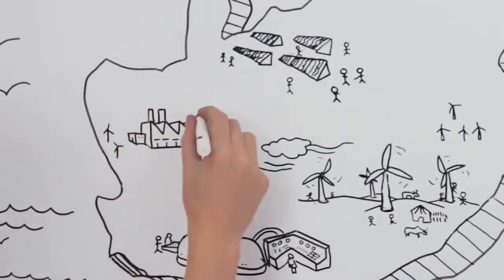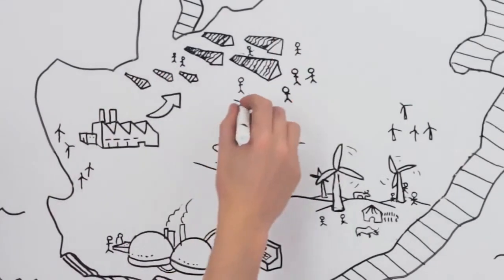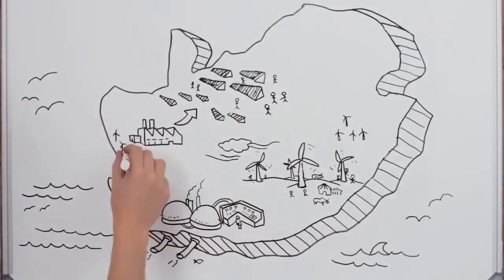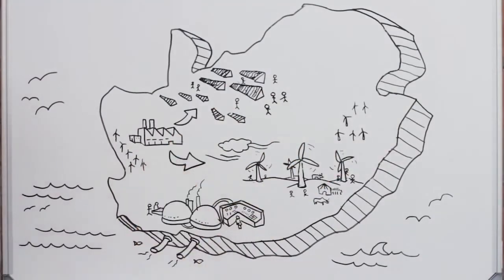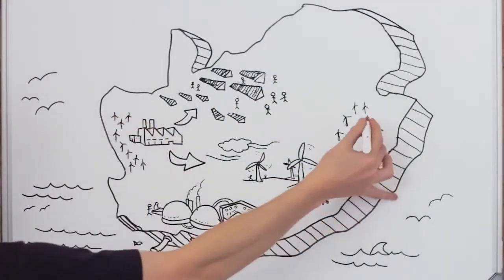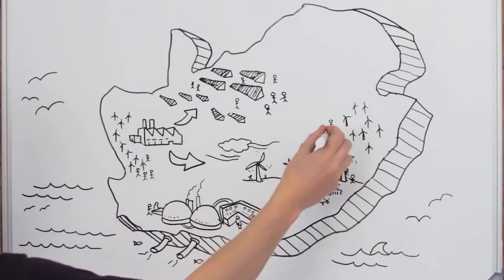As more and more solar plants and wind turbines get built, it will also become worthwhile to build factories in South Africa that can make the components. The electronic systems that control solar and wind plants can be made in South Africa and also be exported.